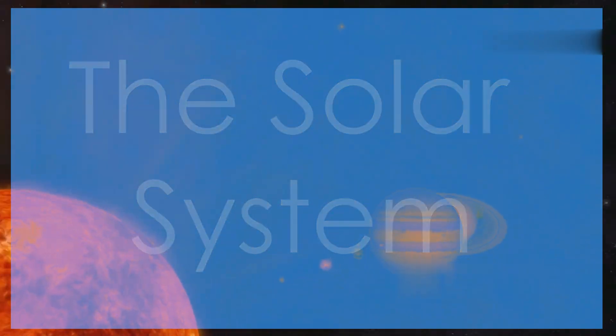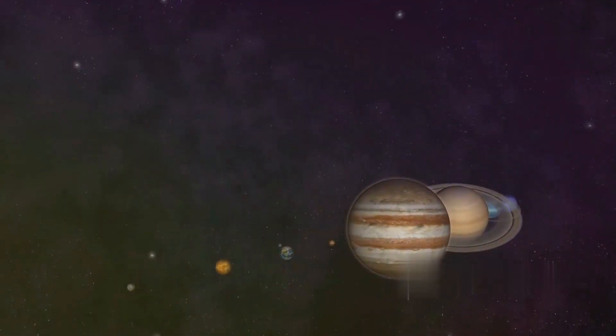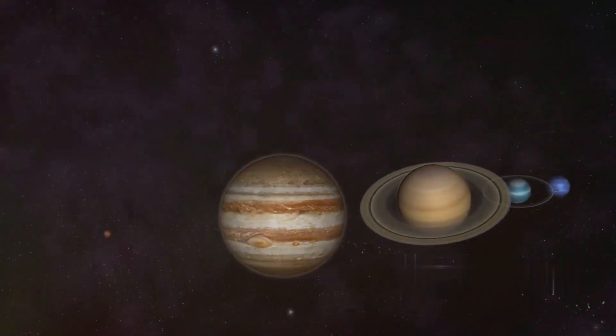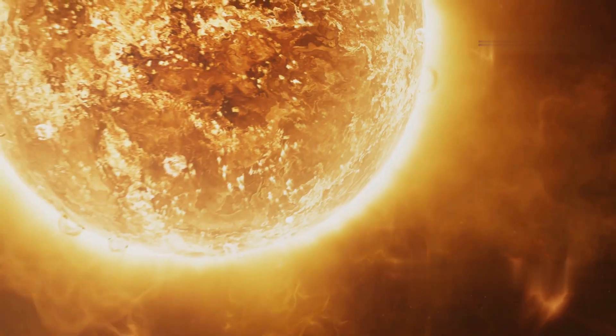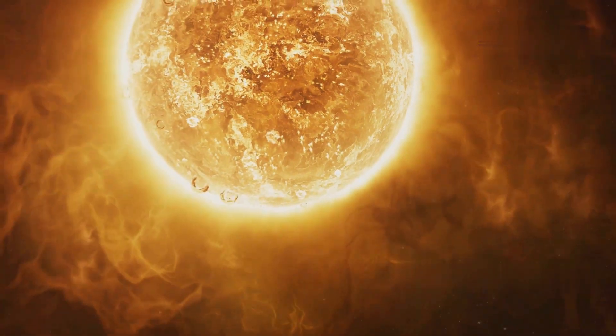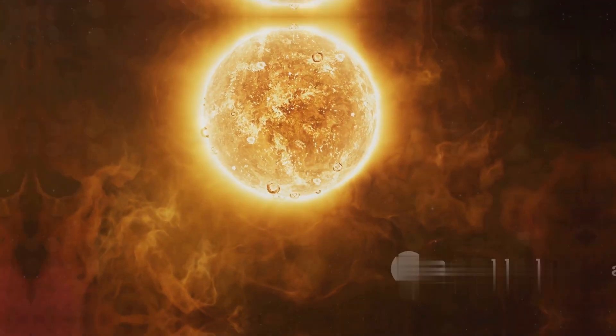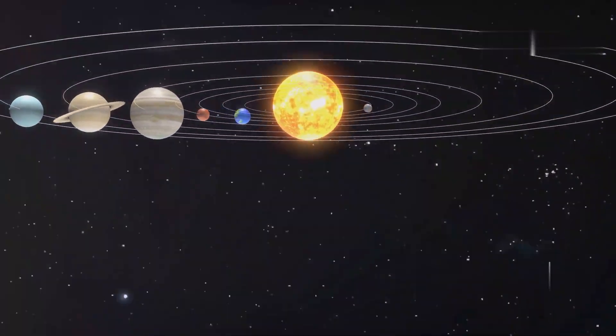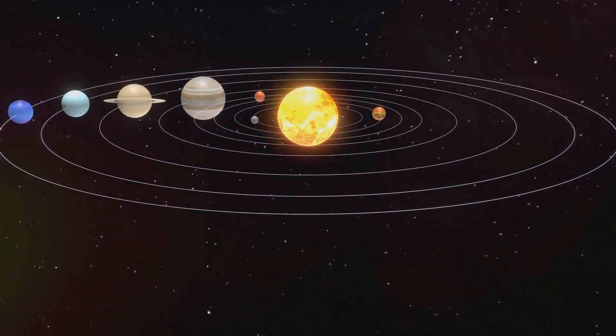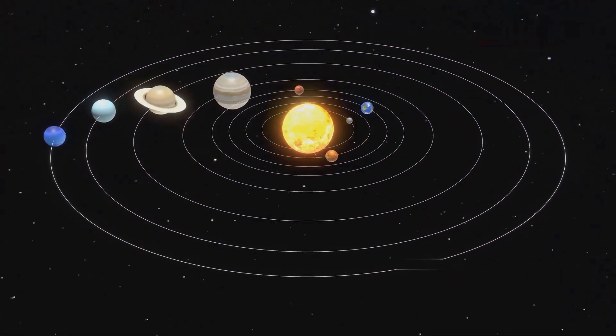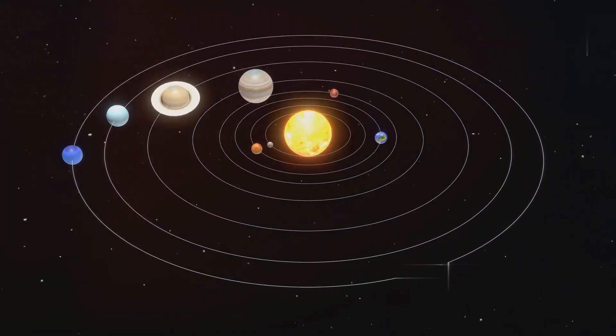Our journey begins at home, in our solar system, a fascinating and complex system that has intrigued humanity for centuries. This system is dominated by the sun, a star of immense energy and gravity, providing the necessary warmth and light for life on Earth. Orbiting the sun are eight planets, each with its own unique characteristics, from the scorching surface of Mercury to the icy winds of Neptune.